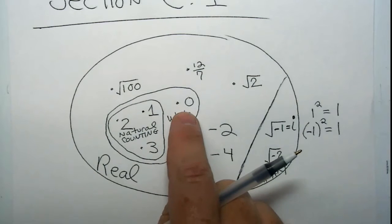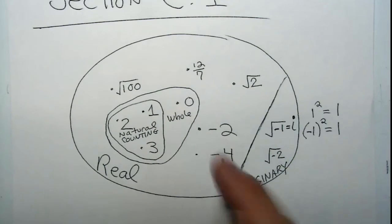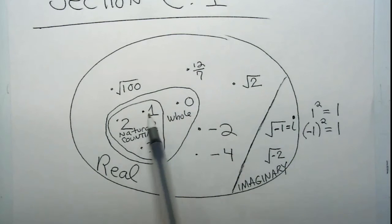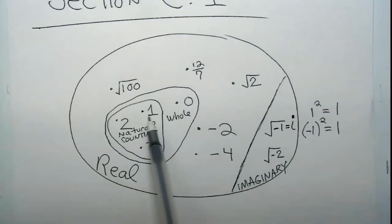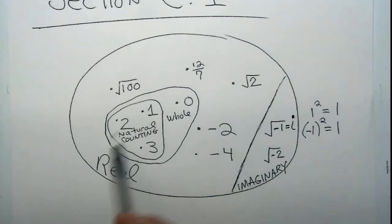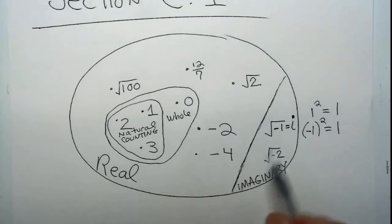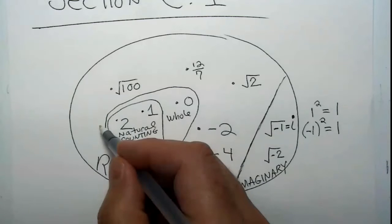You don't really use 0 for counting. If I were to count the number of students seated in the class, I would count: 1, 2, 3, 4, 5. But I don't start at 0. So 0 is included in the whole numbers.